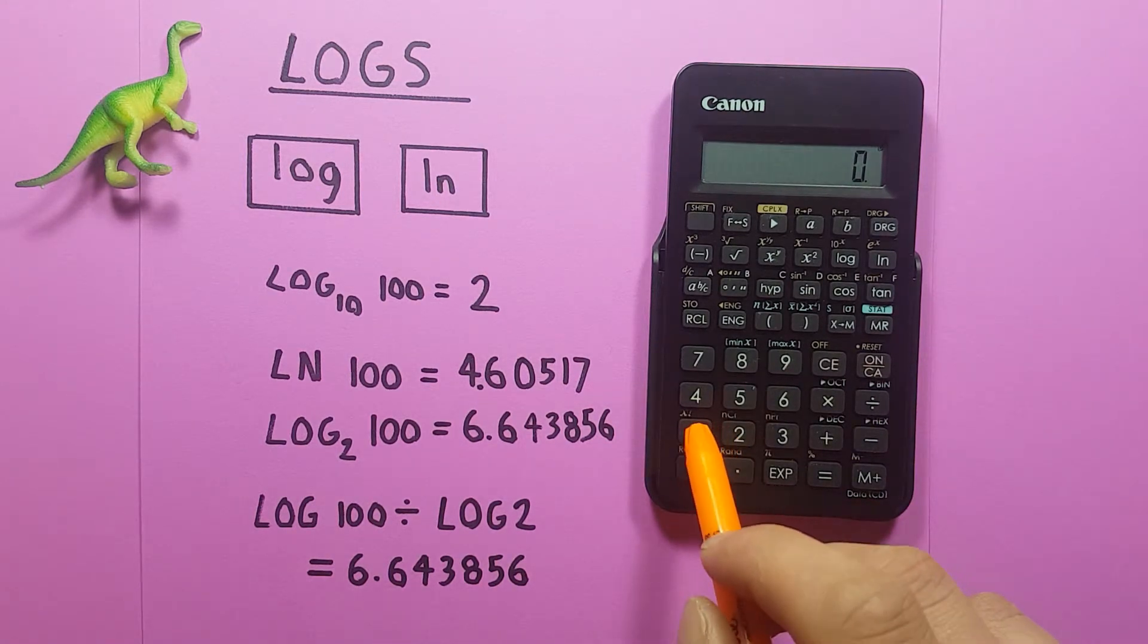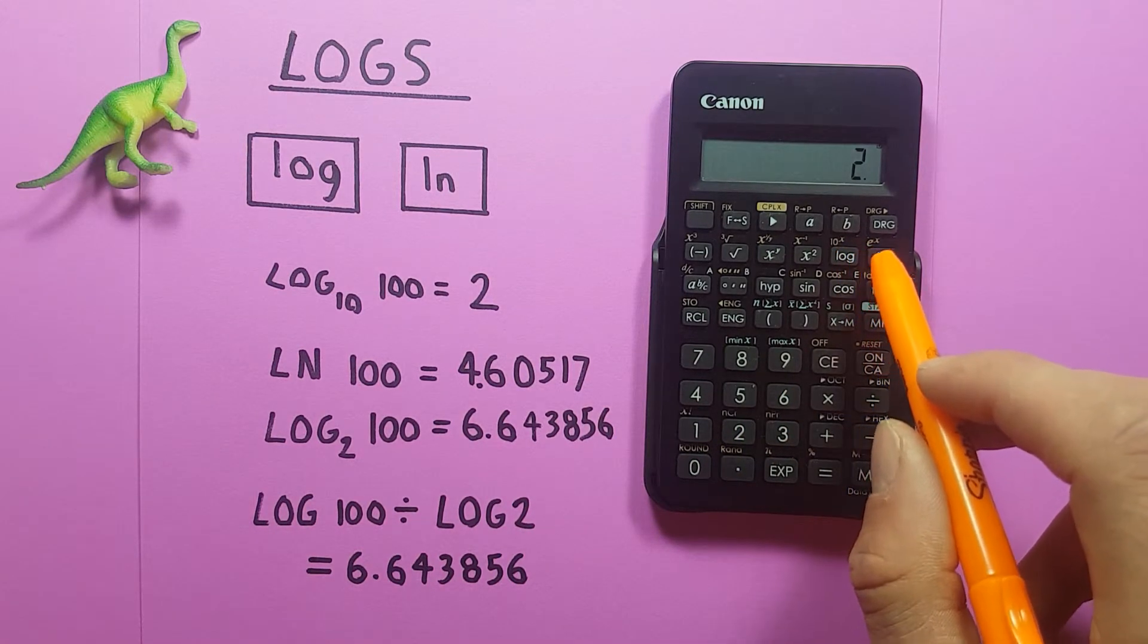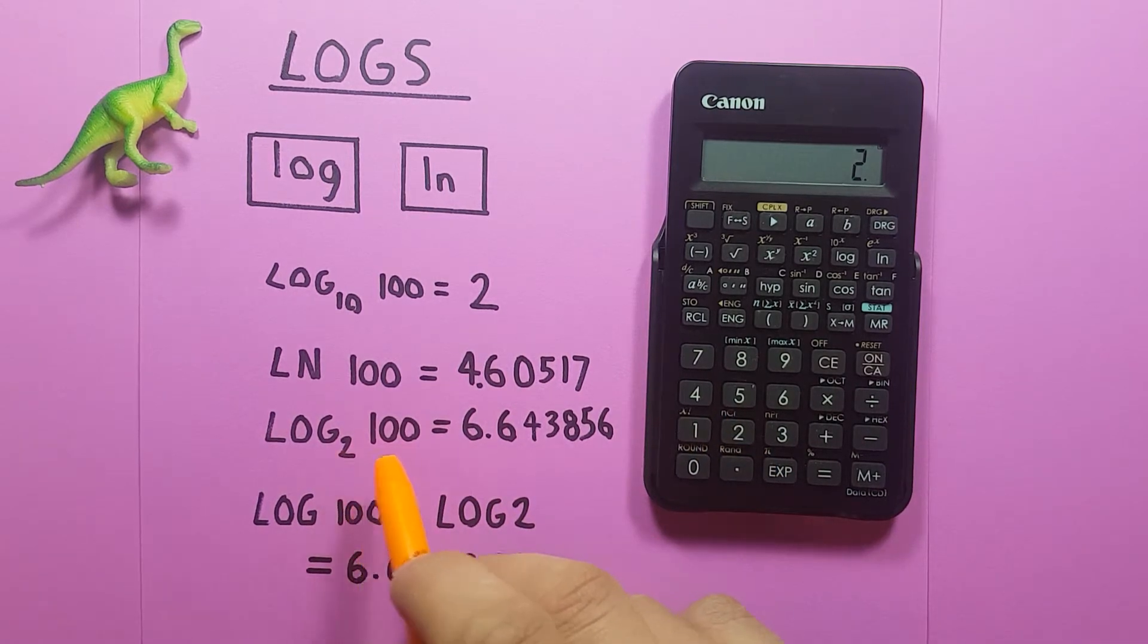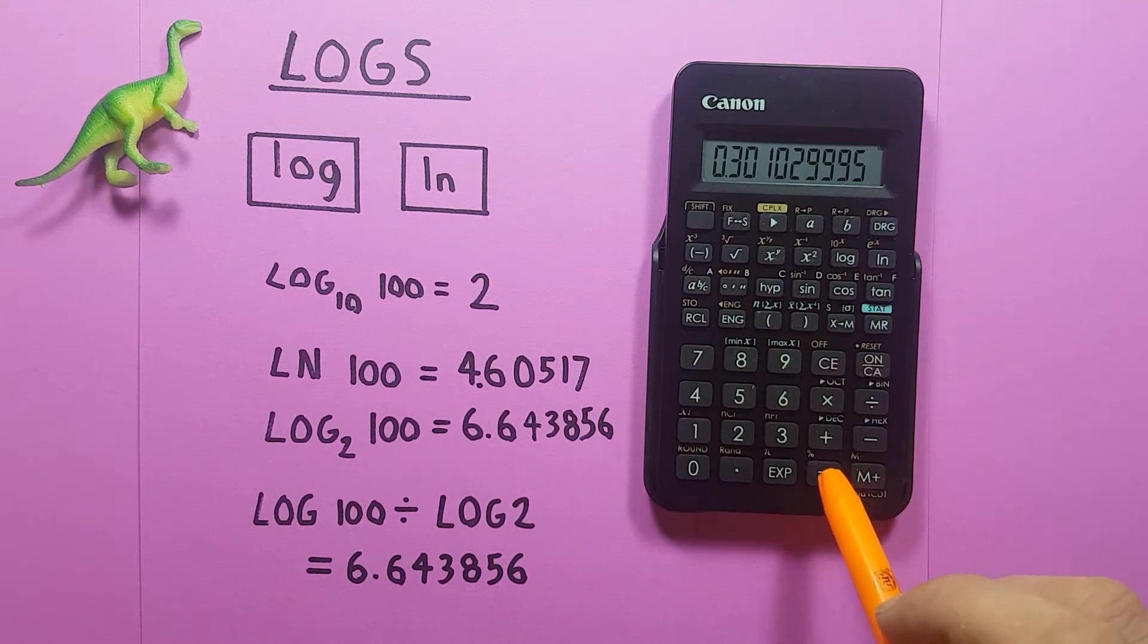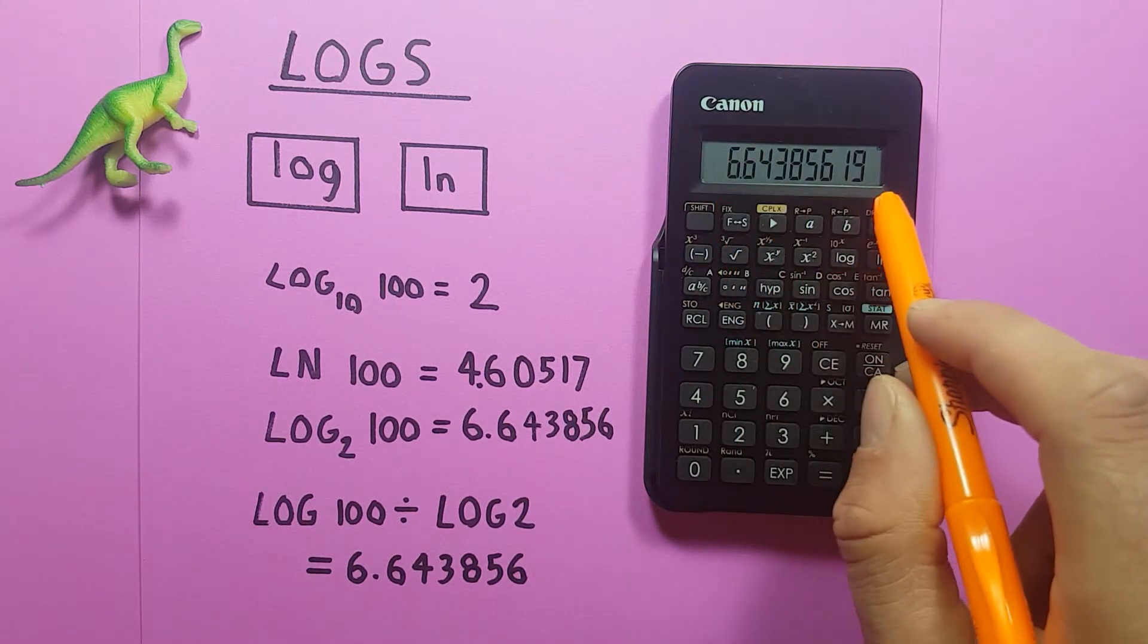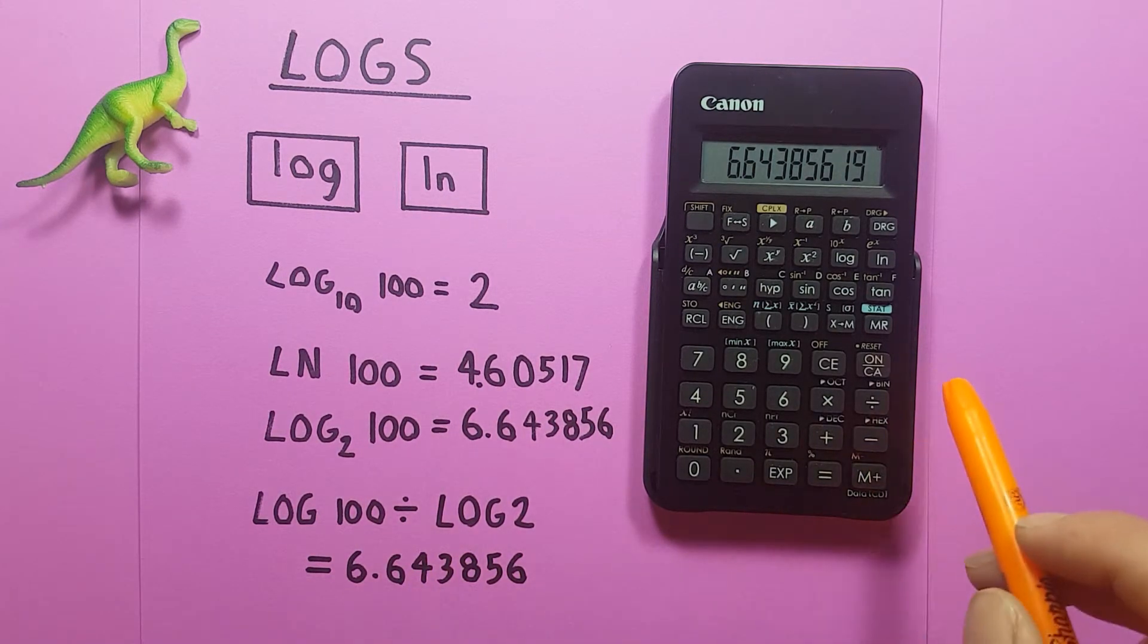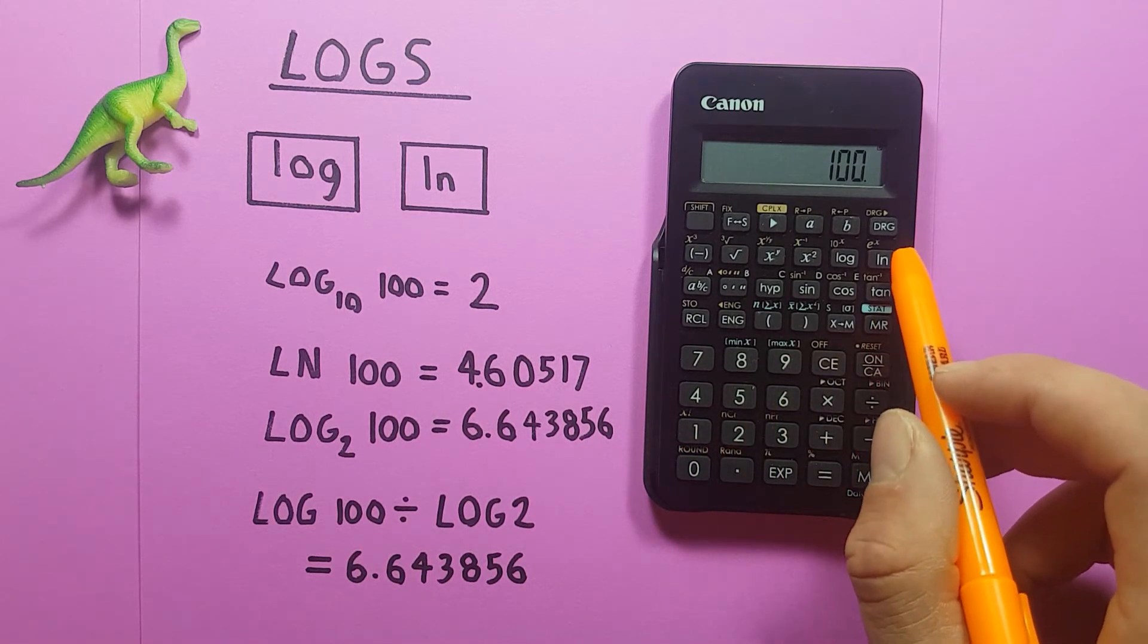So first we place 100 on the screen, press log, and then divide it by, place 2 on the screen because that's our base that we want, and then press log again, and equals. This will give us the log base 2 of 100.